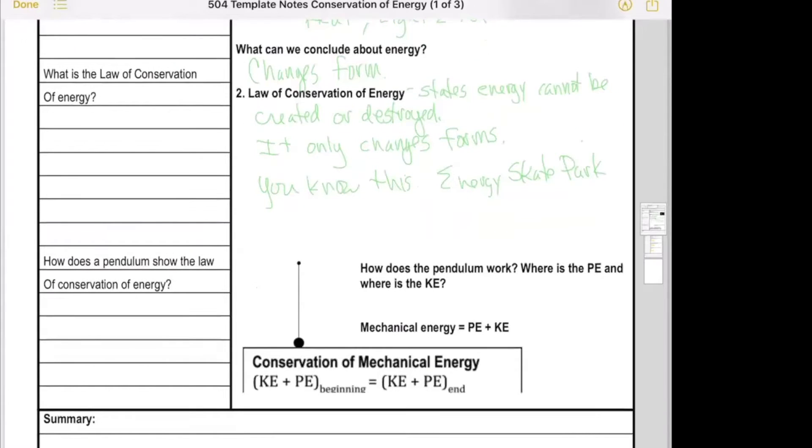Now when you have a pendulum moving back and forth, swinging back and forth, let's say we've got a pendulum moving. It goes from there to there to there. The potential energy is kind of like that skate park.